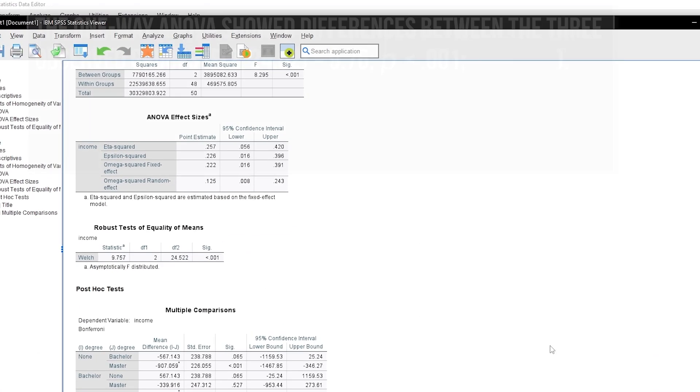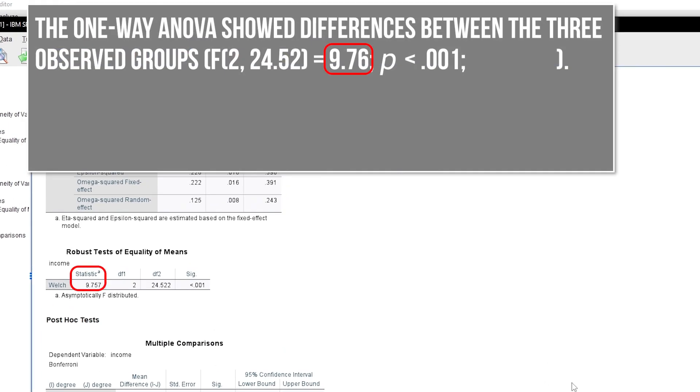First, one formulates whether the groups are different or not, providing the test statistic alongside the degrees of freedom as well as the p-value.